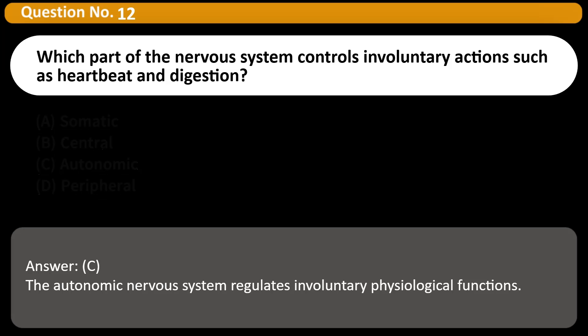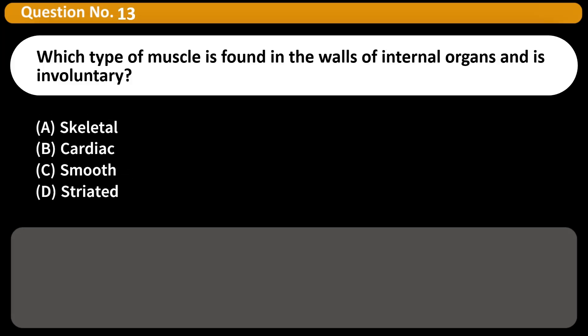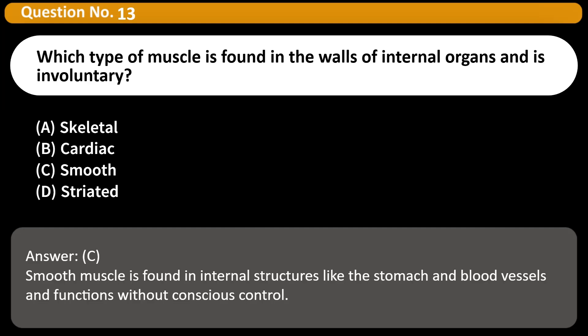Which type of muscle is found in the walls of internal organs and is involuntary? A) Skeletal, B) Cardiac, C) Smooth, D) Striated. Answer: C. Smooth muscle is found in internal structures like the stomach and blood vessels and functions without conscious control.